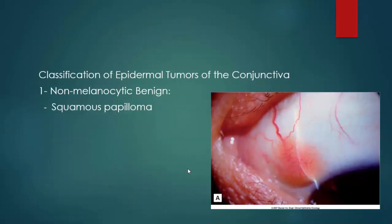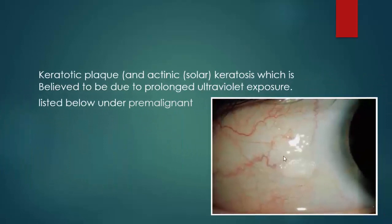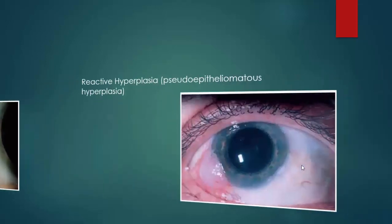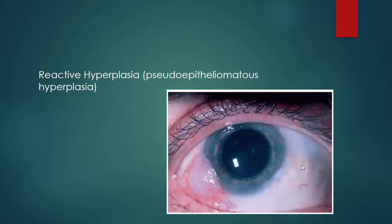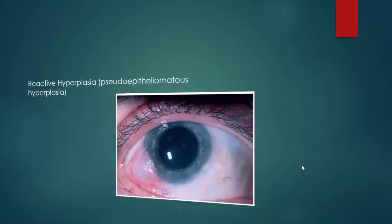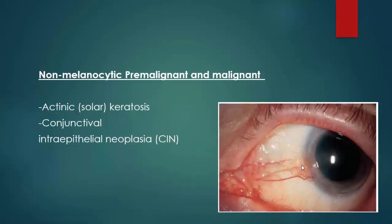Classification of epidermal tumors of the conjunctiva includes non-melanocytic benign tumors, including squamous papilloma like this photo, and keratotic plaque — also called actinic keratosis — which is believed to be due to prolonged ultraviolet exposure and can be listed as a pre-malignant lesion, like this photo. Reactive hyperplasia, or pseudoepitheliomatous hyperplasia, is active hyperplastic conjunctival epithelium. Non-melanocytic pre-malignant and malignant lesions include actinic keratosis and conjunctival intraepithelial neoplasia, also called CIN, like this photo.